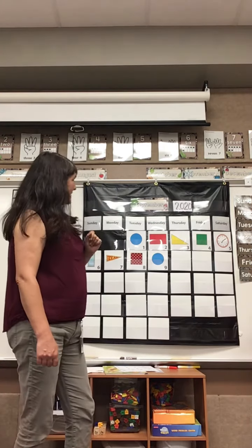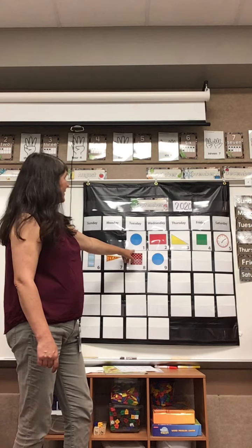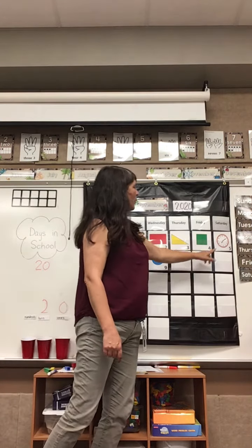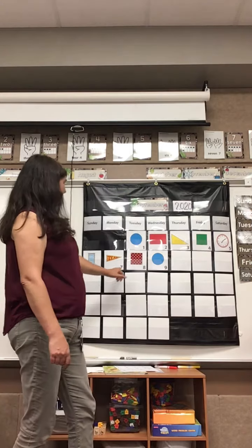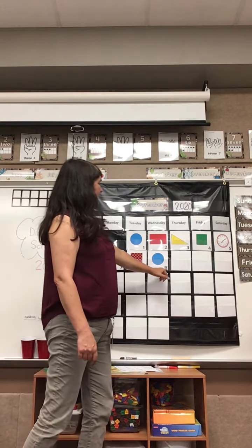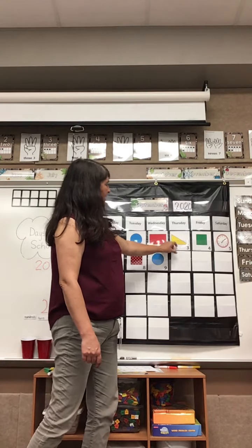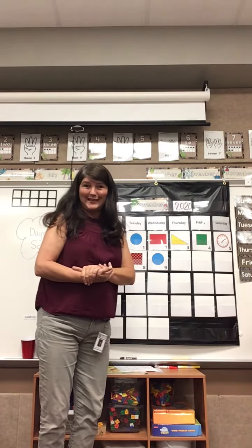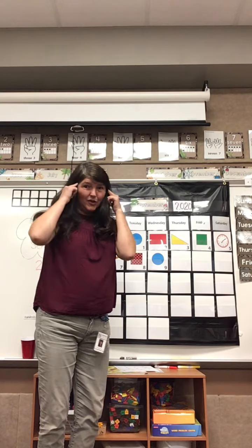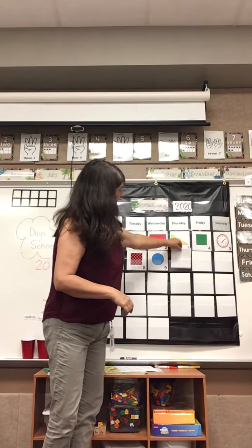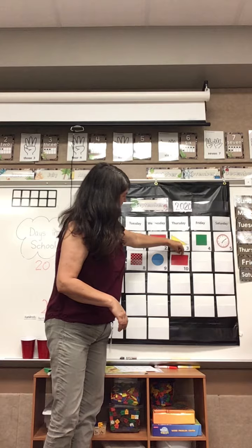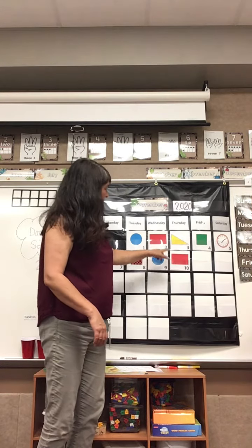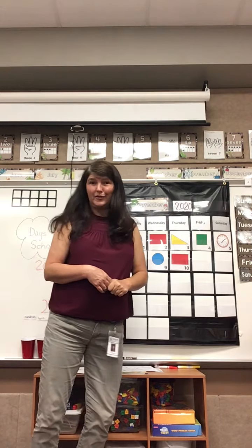Let's count to see how many days we've had in the month of September. One, two, three, four, five, six, seven, eight, nine, ten. Yesterday we had a blue circle — does anybody have a prediction about what today is going to be? Think it in your brain and let's see if you're right. Did you think it was going to be a rectangle? A red rectangle? If you did, you were right.